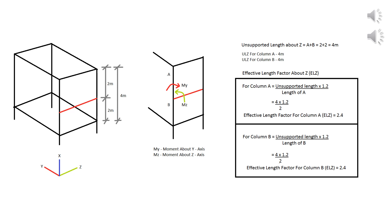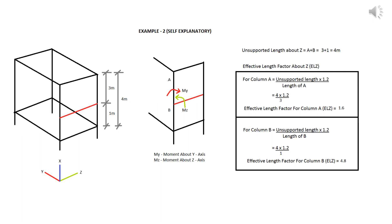Effective length factor about z-axis is shown in calculation. That is, effective length factor for column A is unsupported length about z divided by length of column A into 1.2. Here, unsupported length about z divided by length of column A is general scale factor for column A, and 1.2 is effective length factor. So you need to multiply effective length factor 1.2 with general scale factor. The same procedure can be followed to calculate effective length factor for column B.